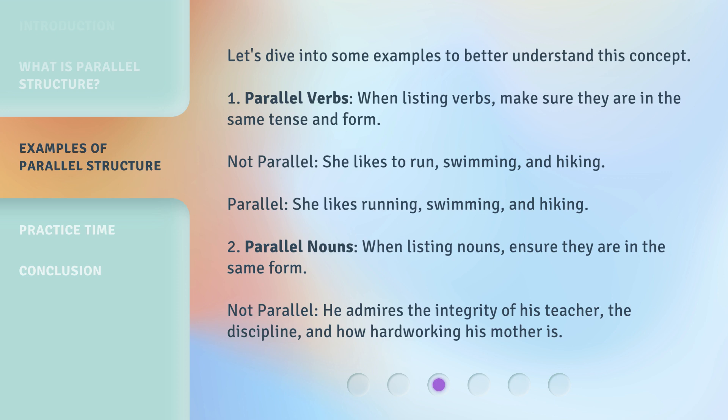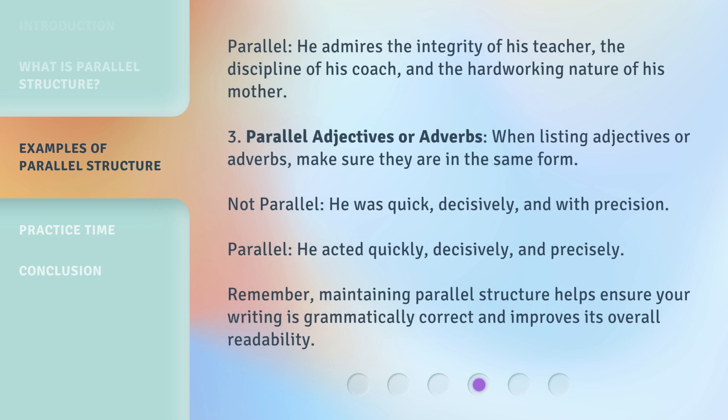2. Parallel Nouns — when listing nouns, ensure they are in the same form. Not parallel: "He admires the integrity of his teacher, the discipline, and how hardworking his mother is." Parallel: "He admires the integrity of his teacher, the discipline of his coach, and the hardworking nature of his mother."